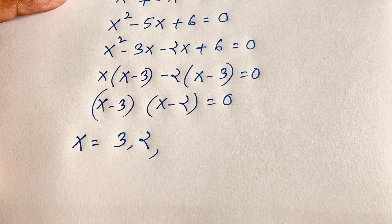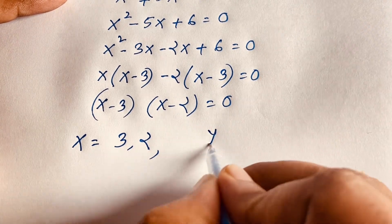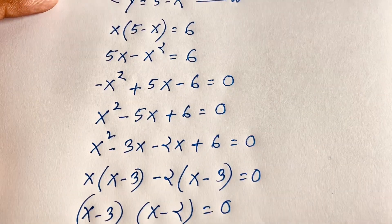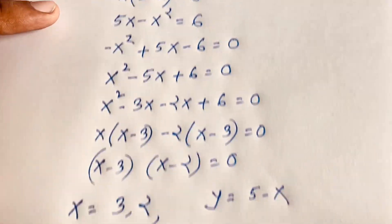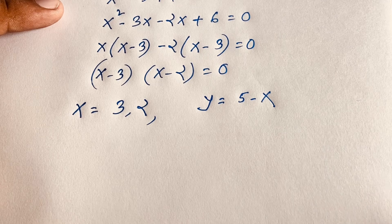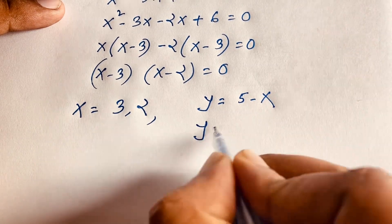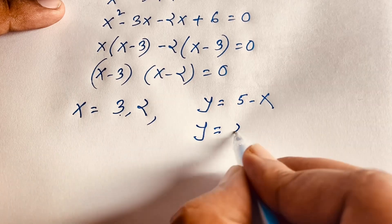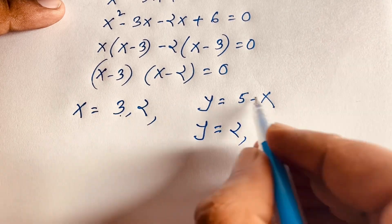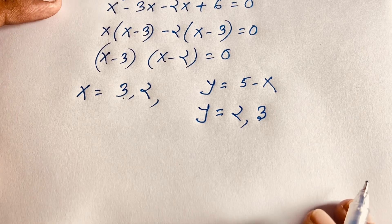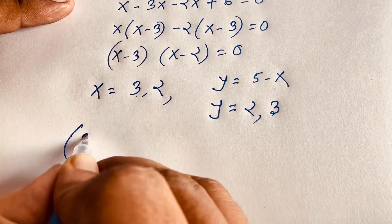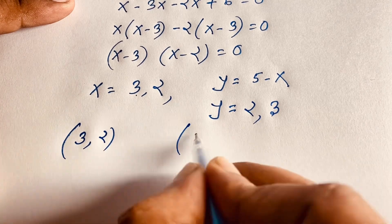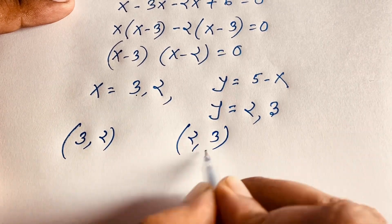So x = 3 or x = 2. Recalling y = 5 − x: when x = 3, y = 2; and when x = 2, y = 3.